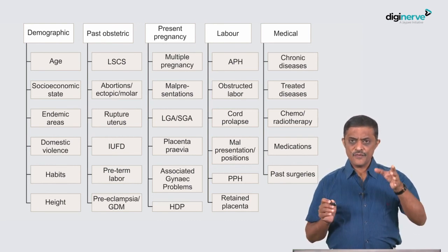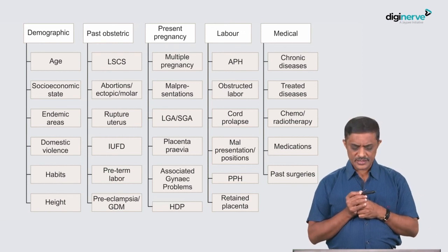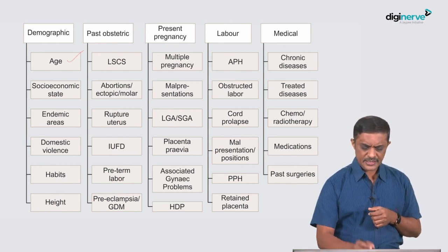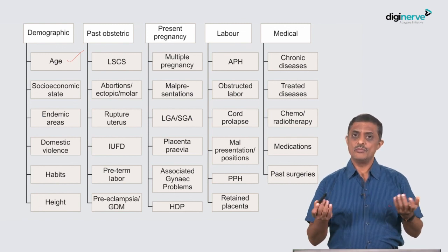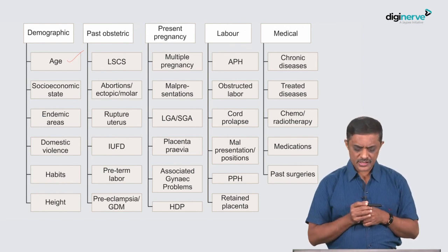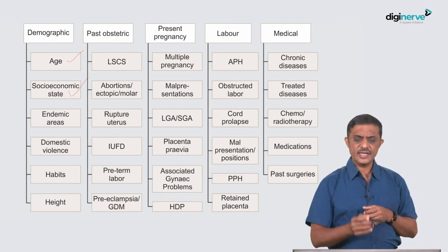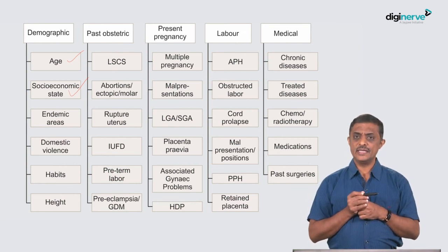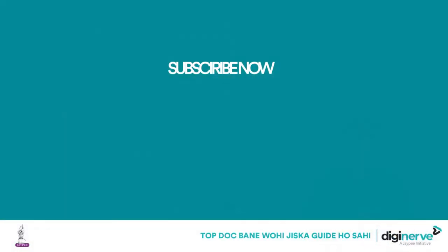A list of risk factors can be identified through a good history and thorough examination. Looking at the demographic aspect of the mother, both adolescent pregnancy and elderly pregnancy are high-risk. Socioeconomic status directly or indirectly influences the outcome of pregnancy and is also considered a risk factor.